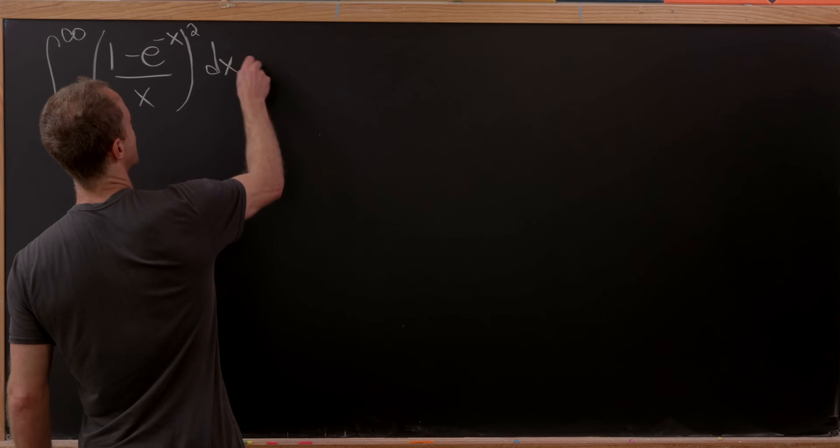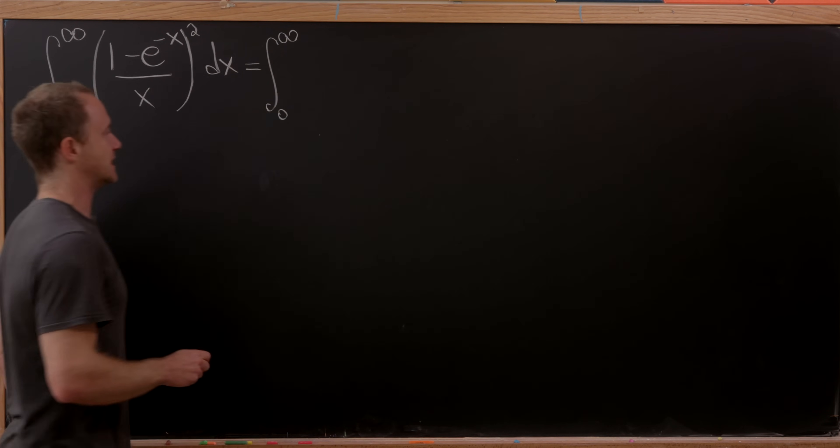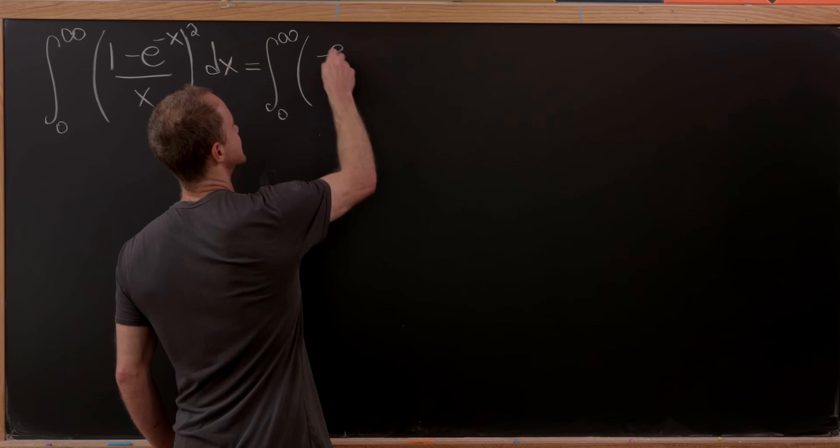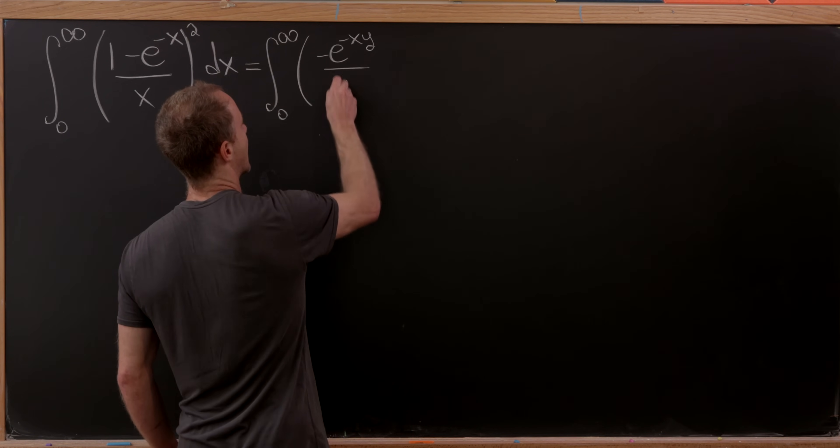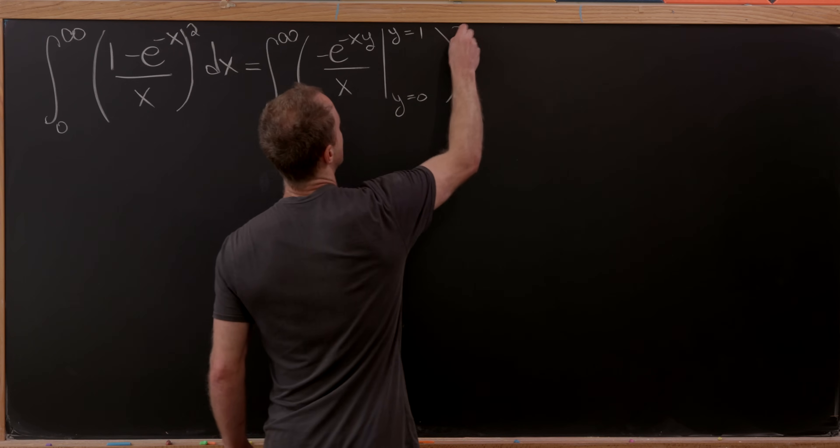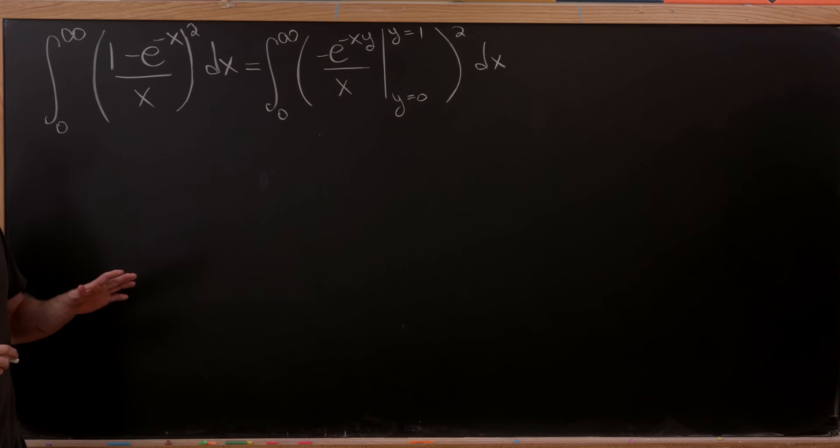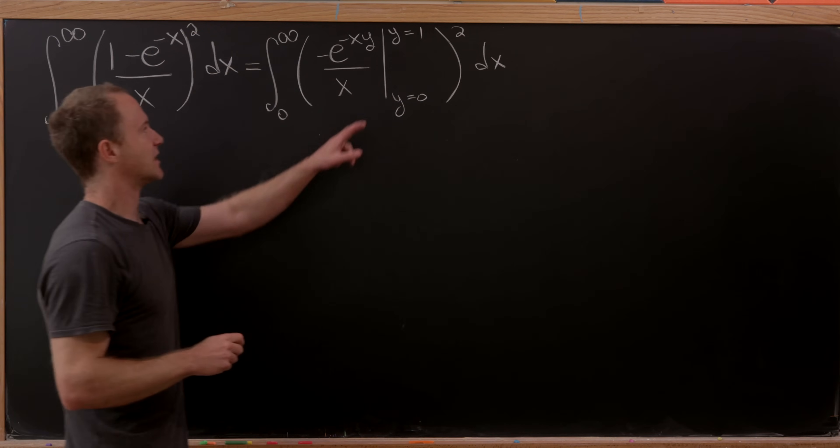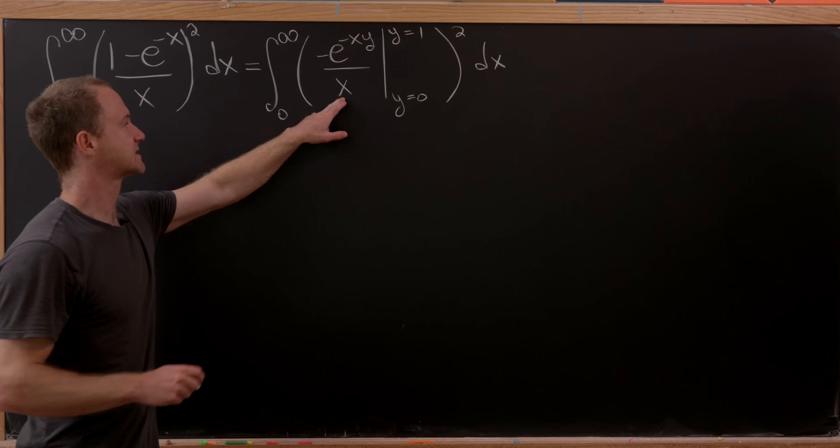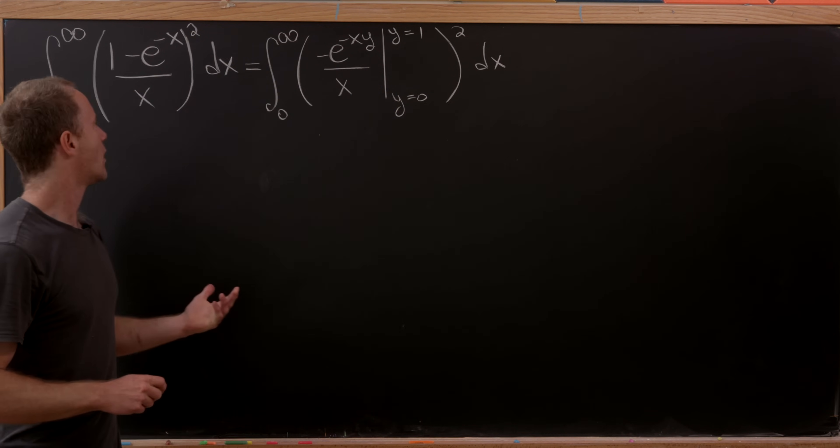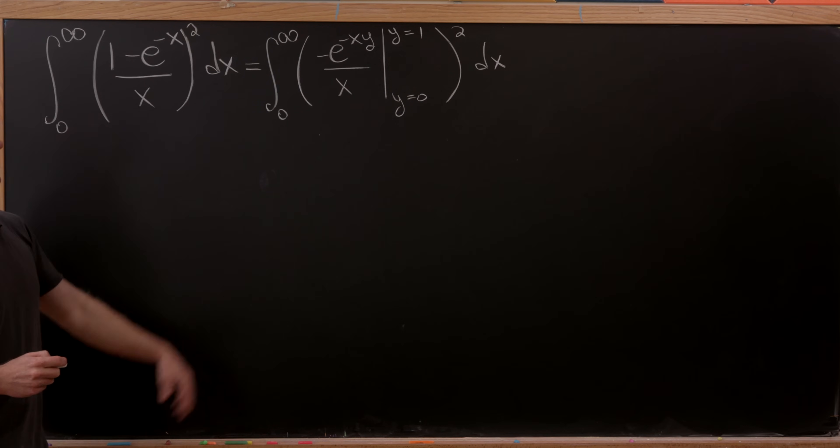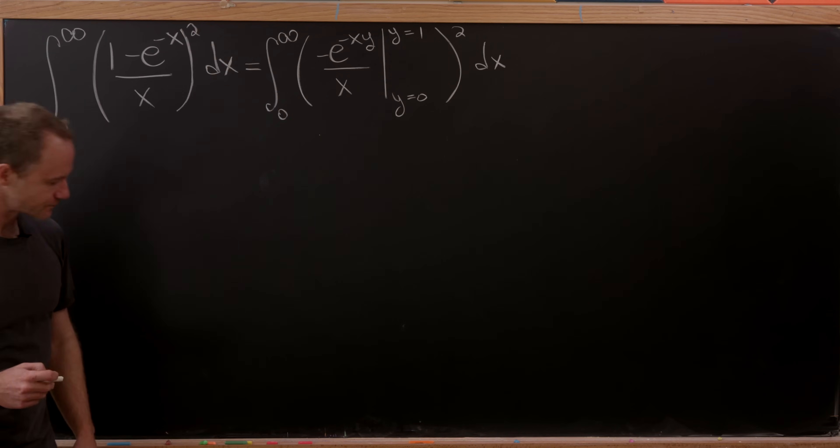So let's first notice that we can rewrite this in the following form: the integral from 0 to infinity, and then we'll have -e^(-xy)/x evaluated from y equals 0 up to y equals 1, then we'll square that dx. Let's talk our way through that. Notice evaluating this at y equals 1 will give us -e^(-x)/x. Then evaluating this at 0 will get -1/x. But then since we've got this minus sign here and there's a subtraction built into that evaluation, we end up with exactly this right here.